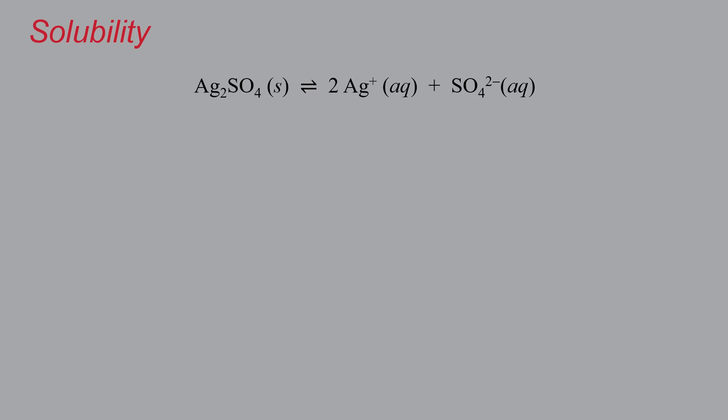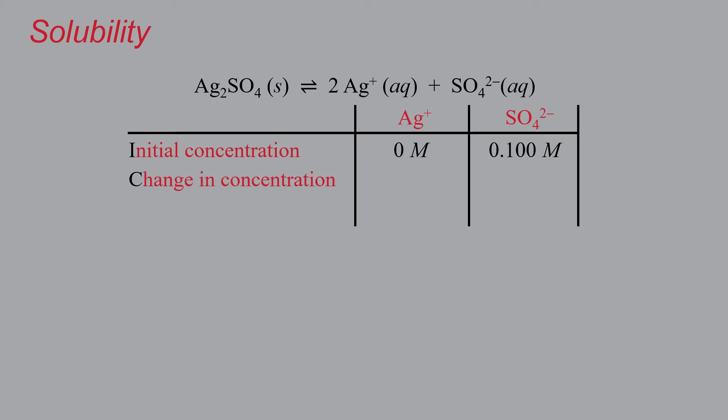So let's go back to the ICE table. So silver sulfate initial. We initially have no silver, but we have 0.10 molar sulfate. Concentration changes. So again, because we are completely devoid of the silver, you can assume at least some forward progress of this reaction,